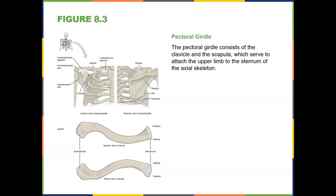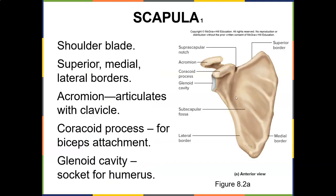The pectoral girdle consists of the clavicle and the scapula, which serve to attach the upper limb to the sternum of the axial skeleton. You have only one true attachment to your body through the clavicle, because the scapula doesn't really attach — it's held there by muscles and ligaments. So the upper extremity's only true attachment to the axial skeleton is through the clavicle. Here's the scapula — this is a right scapula because the head of the humerus attaches here. Here's the superior border and the medial border, meaning closest to the spinal column.